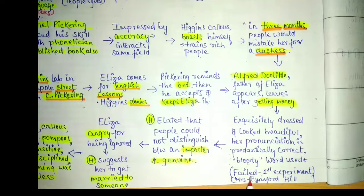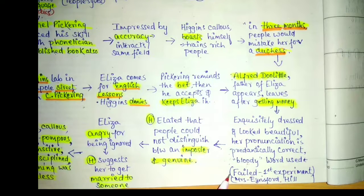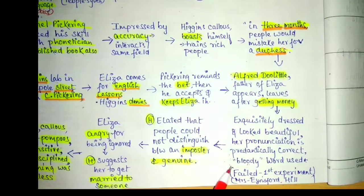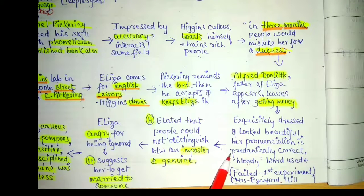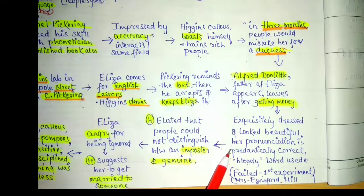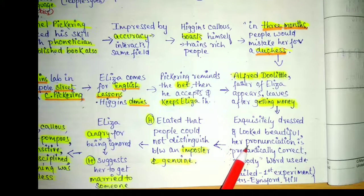Before this, another experiment was done — she was made to interact at Eynsford Hill — and that totally failed; she could not explain herself properly and there were lots of pronunciation errors. But the second time, at a party or gathering, people could not analyze that she was not a duchess. Everybody thought she belonged to the higher class because of her looks and beautiful dress.